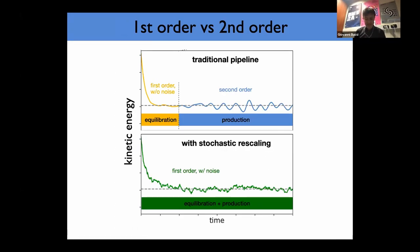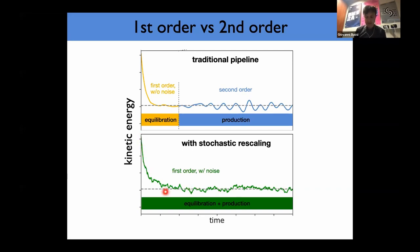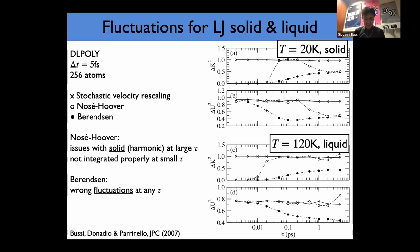Why is it interesting and useful to have a first-order thermostat that gives correct fluctuations? The traditional pipeline for many years was to do equilibration using the Berendsen thermostat — which doesn't give correct fluctuations but equilibrates very well — and then do production using something like Nosé-Hoover, which is typically second-order and gives correct fluctuations. Having a first-order algorithm that can be used for both equilibration and production is very convenient — it makes the choice of thermostat much easier.